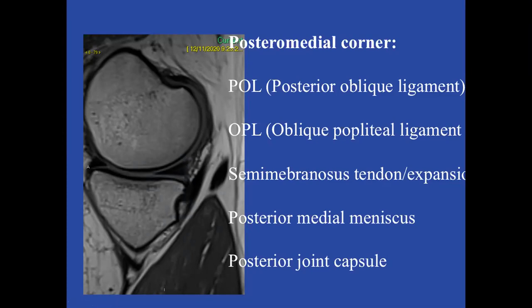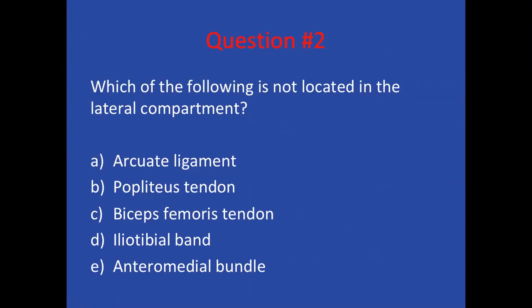The posterolateral corner is the more famous corner injury. Its components include the fibular collateral ligament, popliteus tendon, popliteofibular ligament, biceps femoris tendon, arcuate ligament complex (a Y-shaped structure), posterolateral joint capsule, and meniscopopliteal fascicles. The IT band is a lateral structure but inserts anteriorly on Gerdy's tubercle — IT band insertional abnormalities like tendinopathy and reactive edema are common in runners. The anteromedial bundle is part of the ACL, not the lateral compartment.